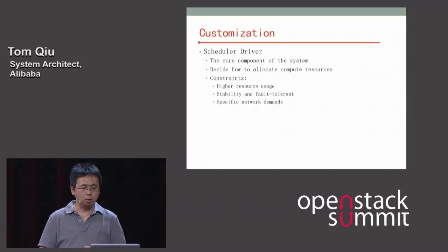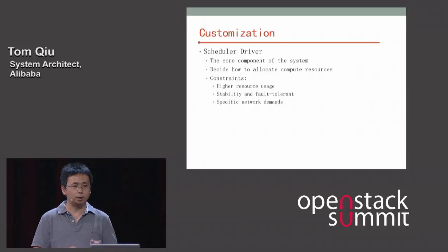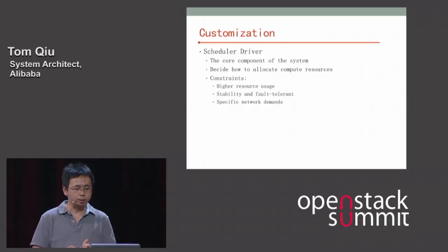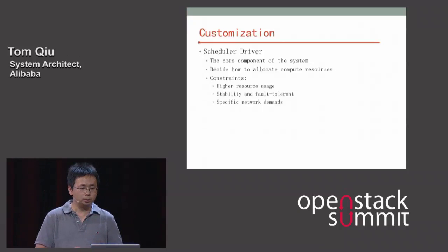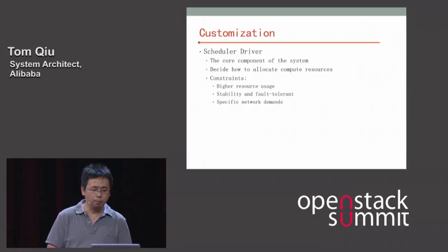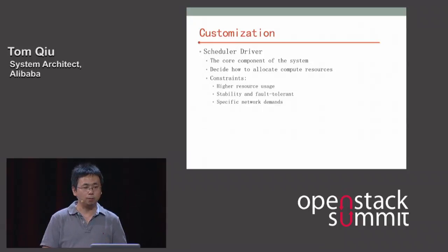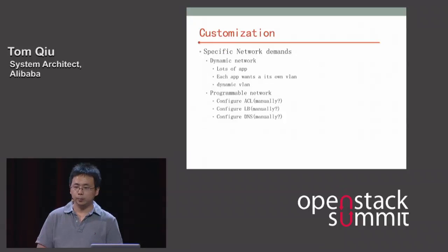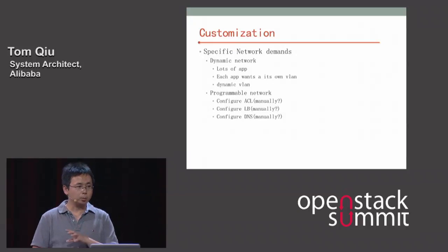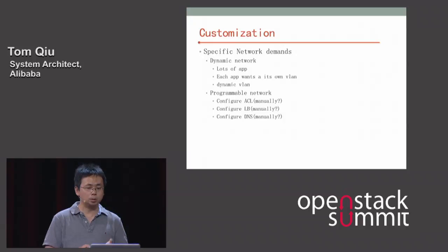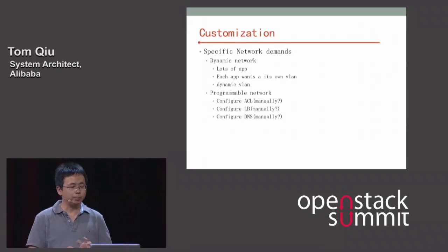The scheduler driver is a core component — it decides how to allocate resources. Our algorithm has several design goals: high resource utilization, stability, and fault tolerance. Since all our applications run on this system, if a network device fails it must not affect applications. This means we must consider the distribution of virtual machines for each application. We also match specific network demands: in Alibaba, each application wants its own VLAN, so we need dynamic VLAN allocation.